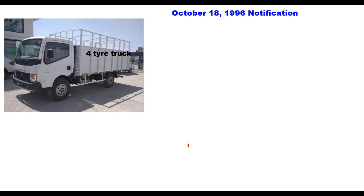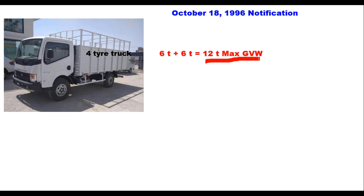That is how the load is calculated as per the notification of the Ministry of Road Transport and Highways of October 1996. A four-tire truck — with two tires on the front axle and two tires on the rear axle, one on each side — has a gross vehicle weight of 6 tons for the front axle and 6 tons for the rear axle, totaling 12 tons.